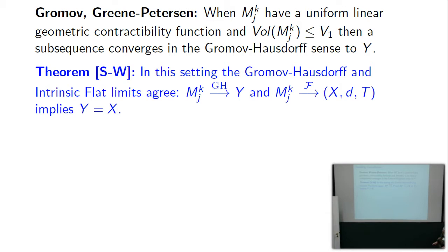Greene and Petersen noticed that the linear contractibility function leads to a Gromov-Hausdorff limit, and in our case it forces intrinsic flat and Gromov-Hausdorff to agree. Ordinarily intrinsic flat could be smaller or even zero, but if the filling volume is kept open at every single point in the space, nothing disappears: no thin tubes, no canceling sheets. The flat and Gromov-Hausdorff limits exactly agree — not even a single zero-density point, not even cusps. In particular we get that the Gromov-Hausdorff limit is countably H^k rectifiable, which was not known before (except for the Ricci case from Cheeger-Colding).